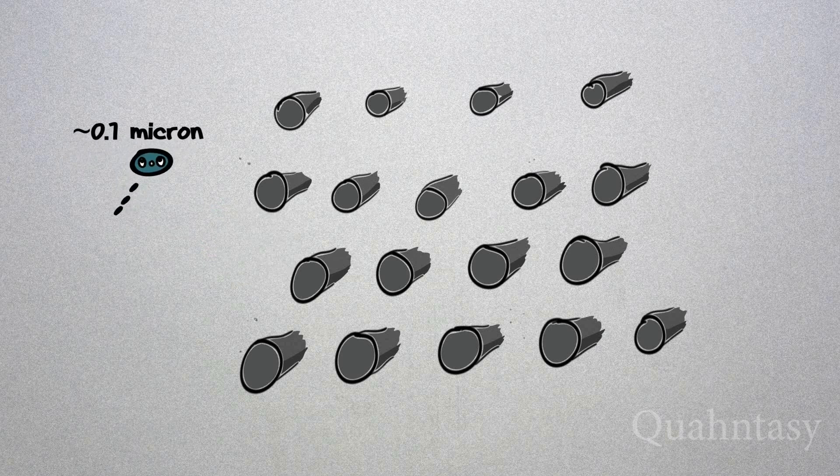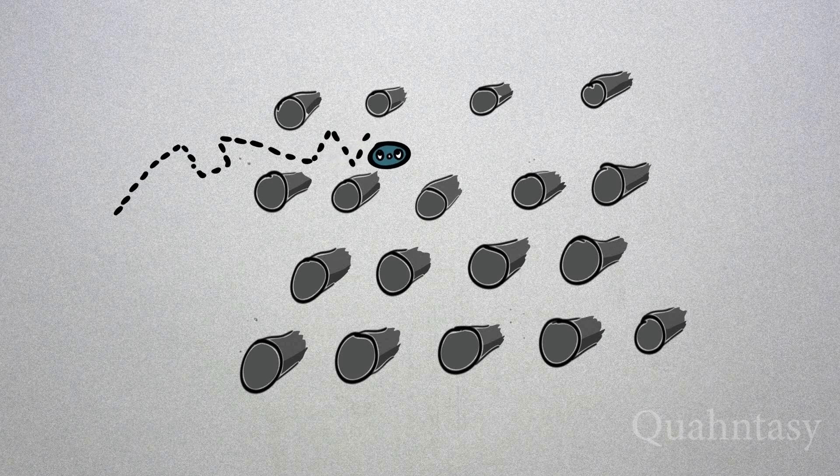Particles that are really small, usually 0.1 microns, are so light that collision with air molecules literally bounce them around so they move in a random zigzag pattern known as Brownian motion. This zigzagging makes it super likely that a particle will bump into a fiber and get stuck.